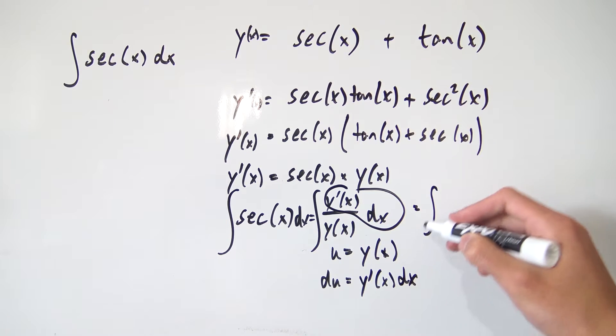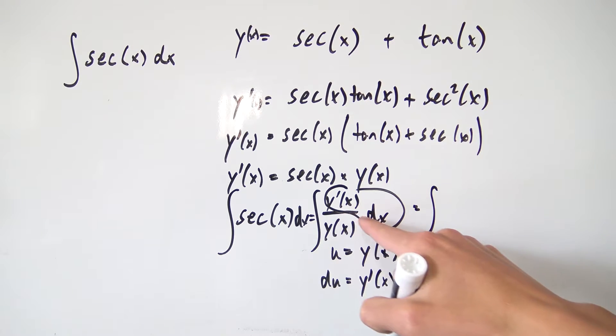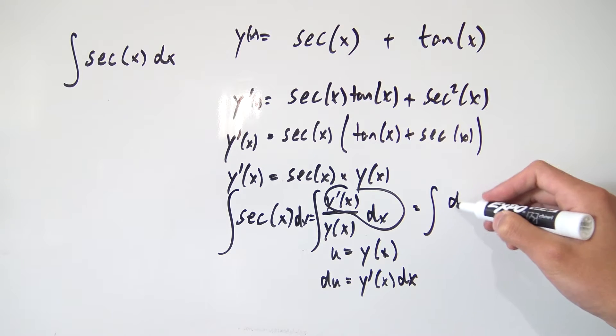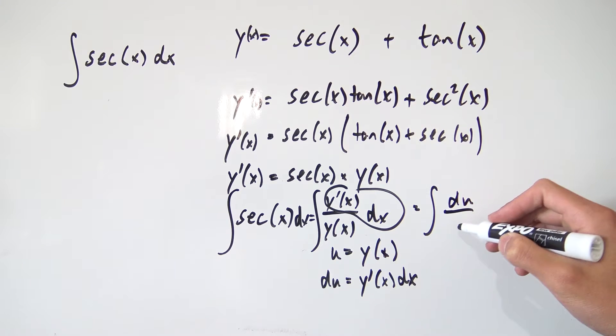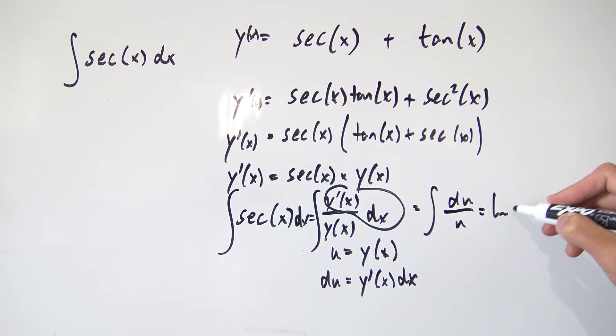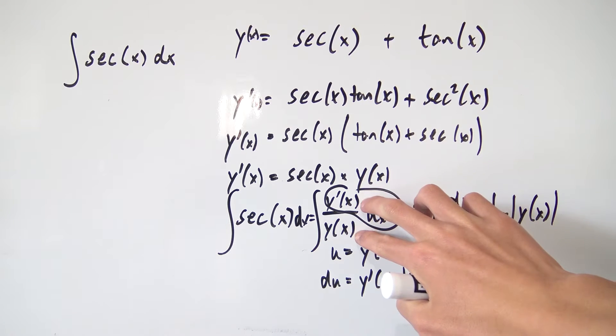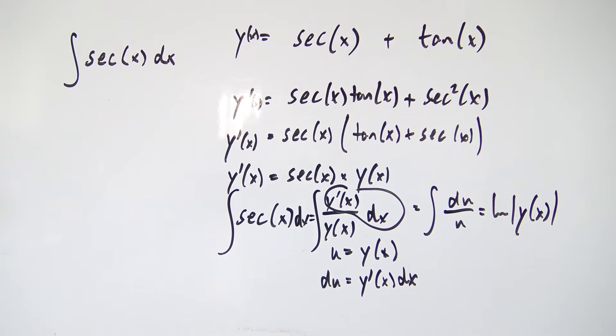Notice this part right here is exactly this whole entire top part. So this thing is the integral of y prime of x times dx, which is du, as we said here, divided by u. And this is just the natural log of u. But u was y of x. So we have the natural log of y of x. So that's the reason why an integral in this form right here is really nice to evaluate.